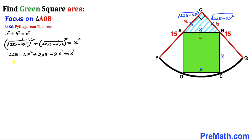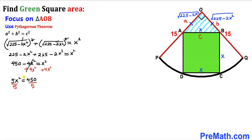Combining like terms on the left side: 450 − 4X² = X². Adding 4X² to both sides: 450 = 5X². Dividing both sides by 5, we get X² = 90.